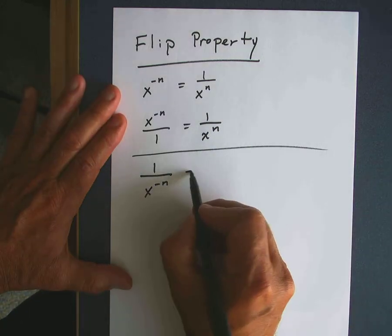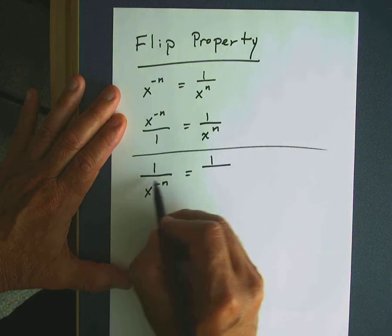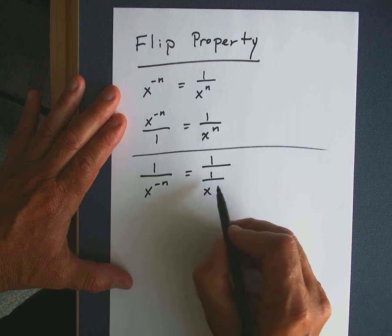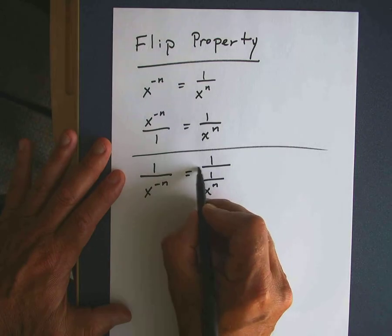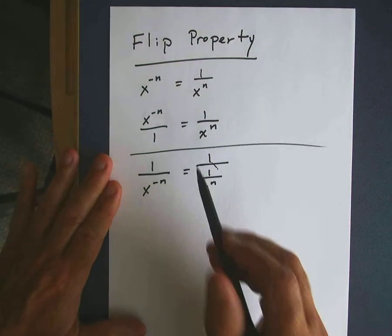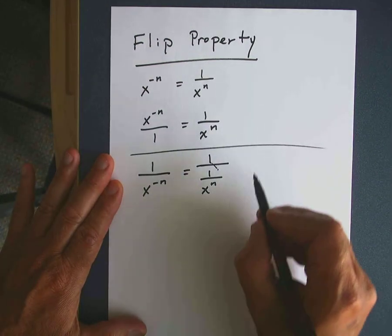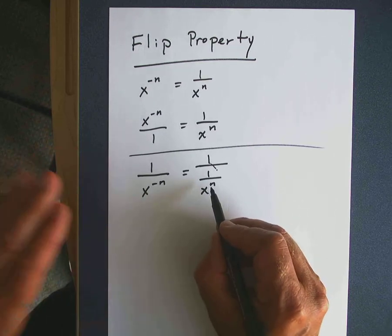Using the definition, I could write this as 1 over, and then take this and write it according to the definition, that's 1 over x to the n power. What we have here is something called a complex fraction, and we will spend quite a bit of time with these later, but a method to clear or simplify these complex fractions is to multiply by denominators or common factors.